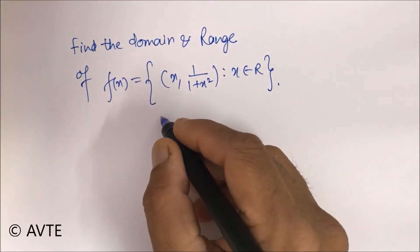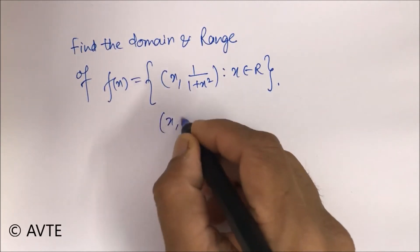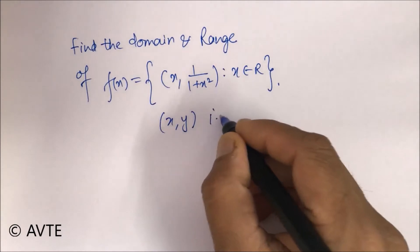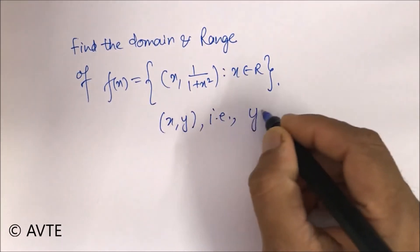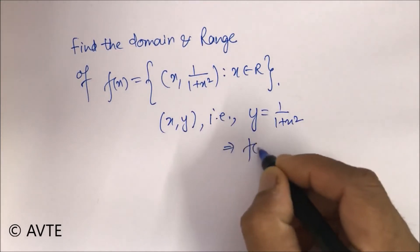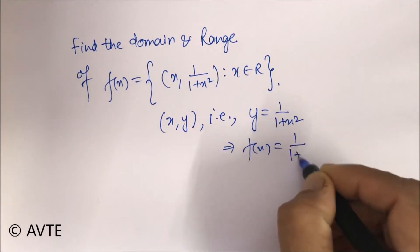So this is (x, y), that is y equals 1 upon 1 plus x square. So this implies f(x) is equal to 1 upon 1 plus x square.